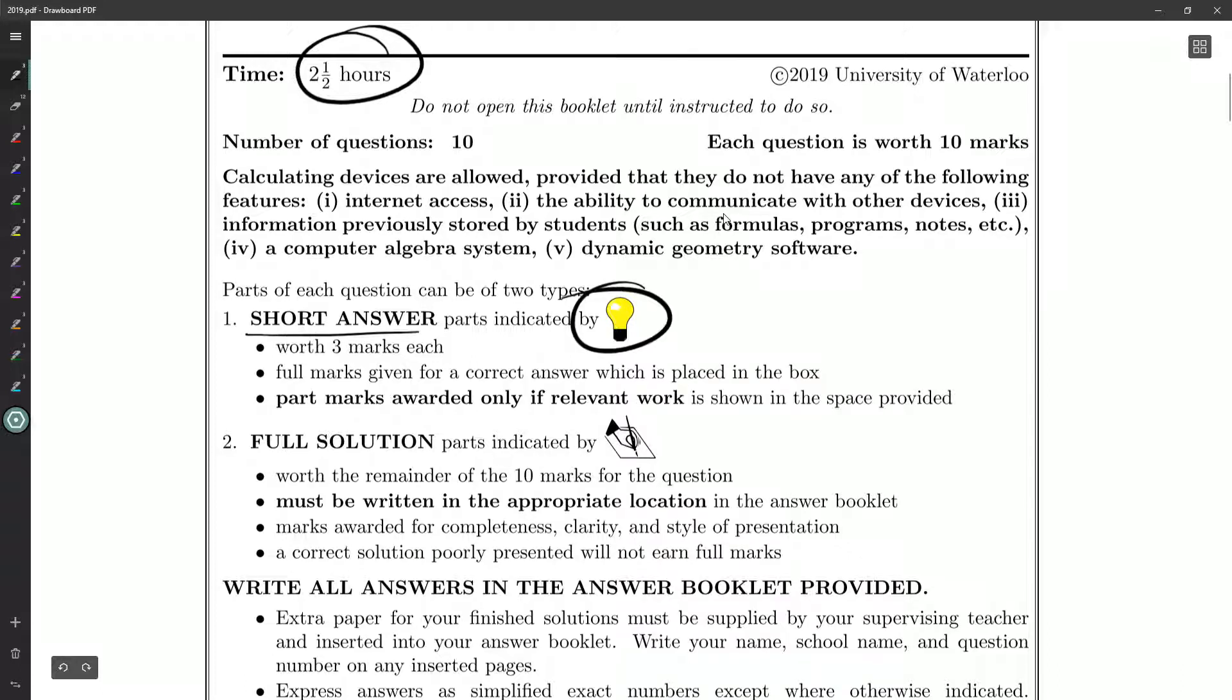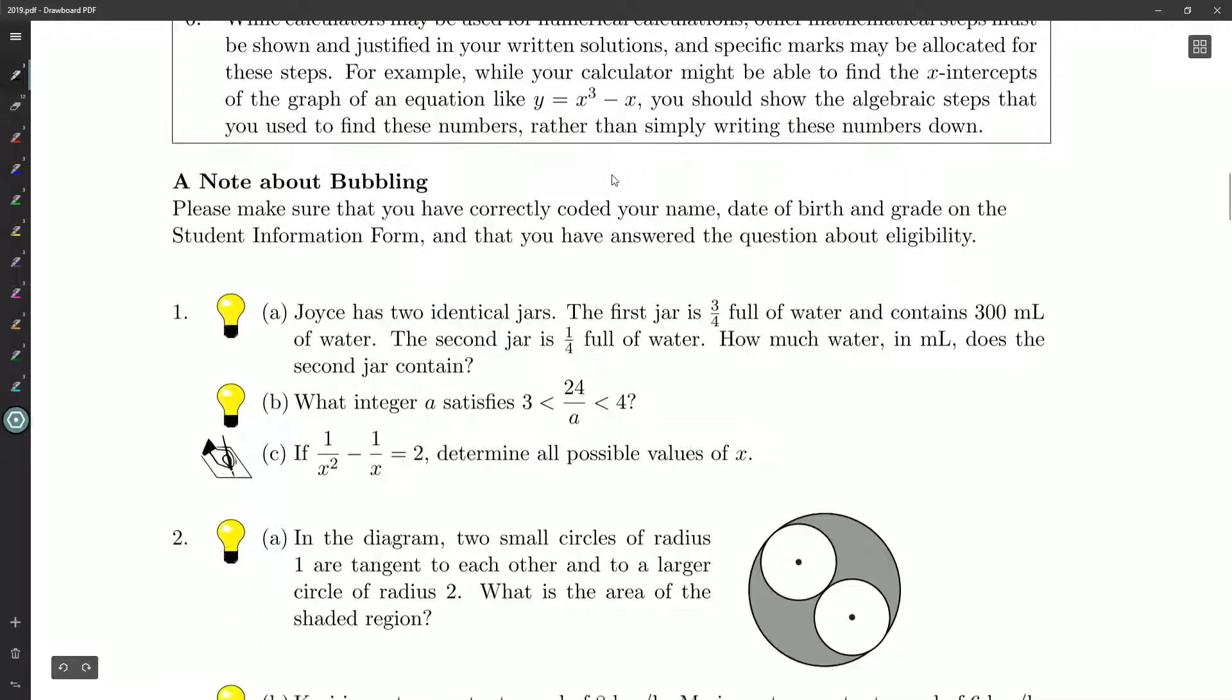Short answers indicated by the light bulb—you just need the final answer there and it looks like they're always worth three marks. And then the full solution questions indicated by a pen writing on paper—you need to justify everything in order to get all the marks. So there's 10 questions on the contest and each is worth 10 marks, so there really isn't any bias. If you've written the Fermat contest from Waterloo, you'll know that later questions like question 25 are worth more marks than question number one. That is not the case here.